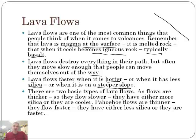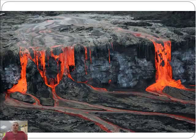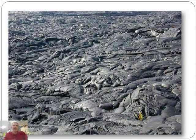There are two basic types of lava flows. A'a flows are thicker, so they flow slower, and they have either more silica or are cooler. Pahoehoe flows are thinner and flow faster — they have either less silica or are hotter. You'll probably want to pause the video to get this text down.